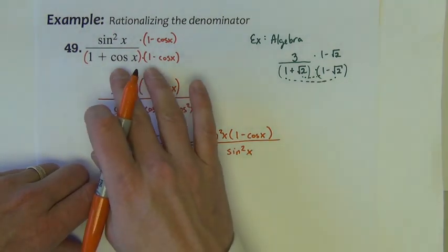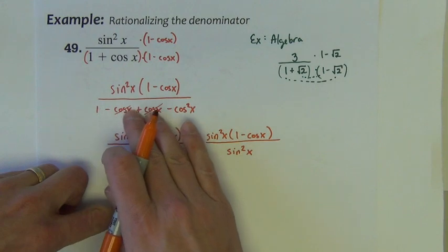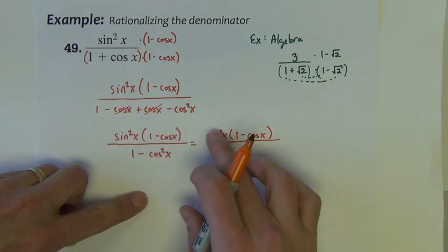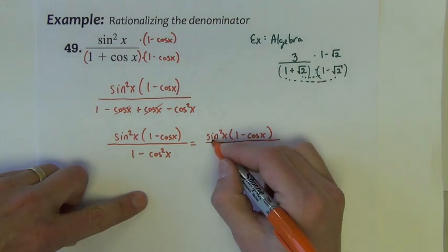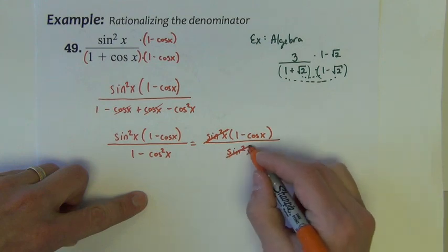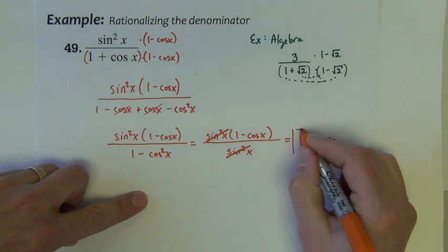Well, look what's happened. In the process of using this conjugate pair, foiling and losing some like terms there, reducing these two terms with the Pythagorean identity to one term, look what we've created. An opportunity to reduce and simplify this fraction even further. We are left with 1 minus cosine x.